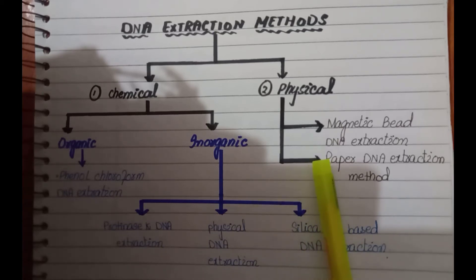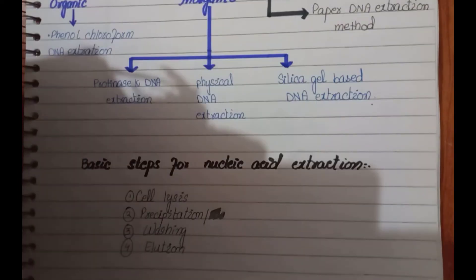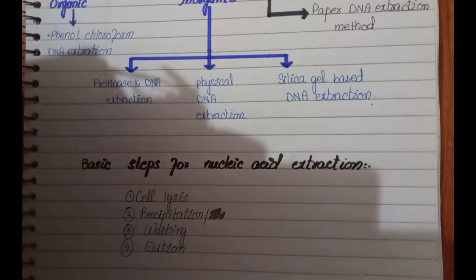Physical methods include magnetic bead DNA extraction or paper DNA extraction. For any DNA extraction there are four main basic steps: first, cell lysis in which all the membranes are lysed or disrupted; second, precipitation of DNA based on the method being used; third, washing for the pure DNA; and fourth, elution of the pure DNA.